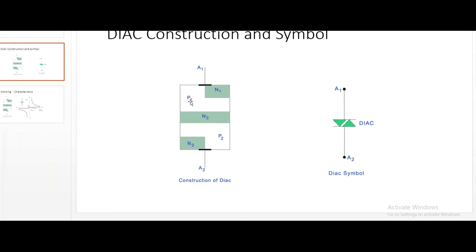DIAC has PNP layers with N1 and N3 layers at the top and the bottom, making it a 5-layer device. The terminals A1 and A2 can also be called MT1 and MT2, where MT1 is the main terminal 1 and MT2 is the main terminal 2. We can call them either A1 and A2 or MT1 and MT2. This is the symbol for DIAC, the diode alternating current.